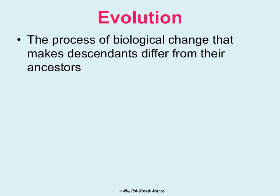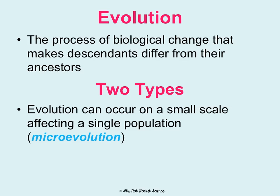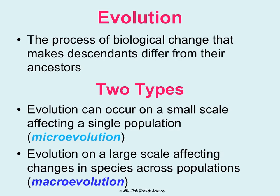First, we need to know what evolution is — that's what this whole unit is about. Evolution is the process of biological change that makes descendants differ from their ancestors. We really see two types of this: microevolution and macroevolution. Microevolution — micro means small — is evolution on a really small scale, looking at just a single population of individuals evolving.